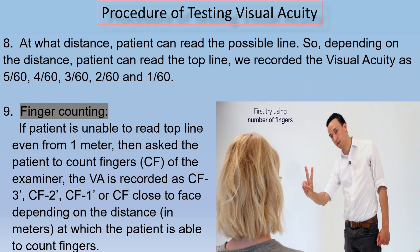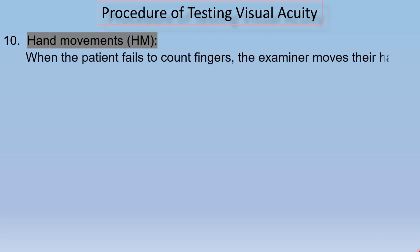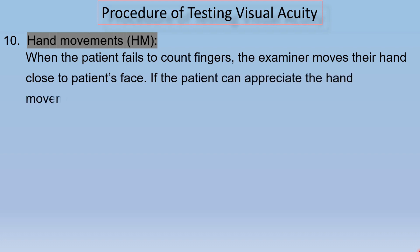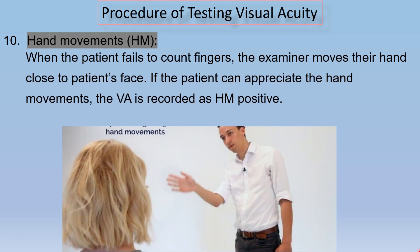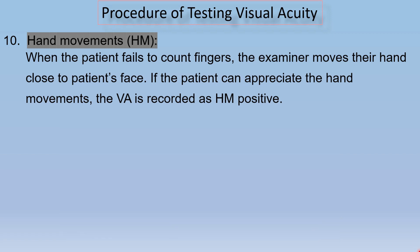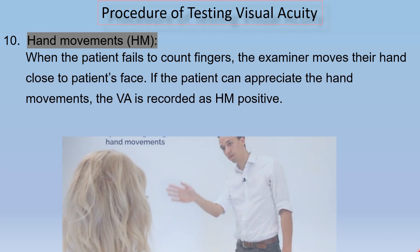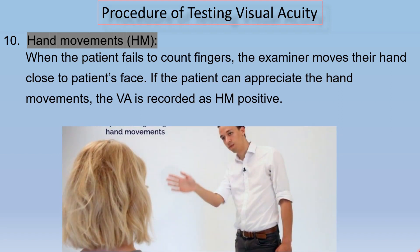If the patient cannot count fingers either, then we note hand movement. When the patient fails to count fingers, the examiner moves their hand close to the patient's face. If the patient can appreciate the hand movements, the visual acuity is recorded as HM positive.